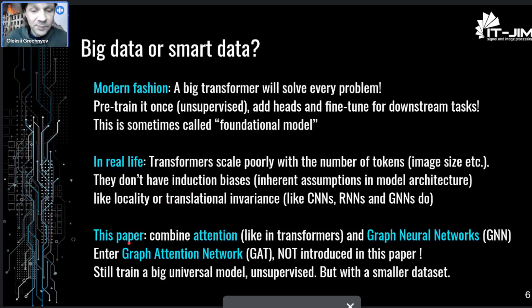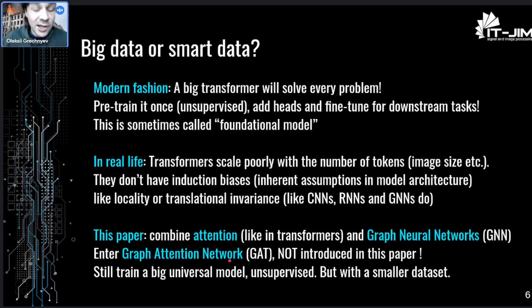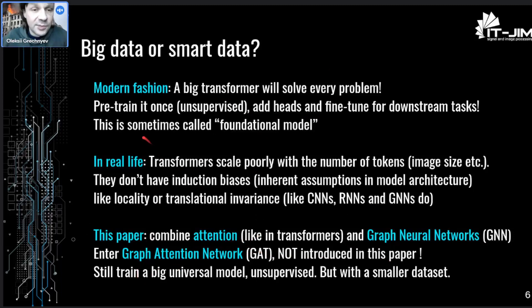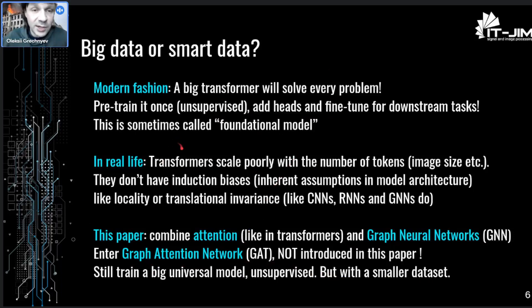In this paper, they combine attention, like in transformers, and graph neural networks. The result is graph attention networks. Of course, this is not introduced in this paper — graph attention networks are pretty much well-known. They still live in this paradigm of training a universal model on supervised data and fine-tuning if needed. But here, as they use graph attention networks, they could do it with a bit smaller dataset compared to vanilla transformers.